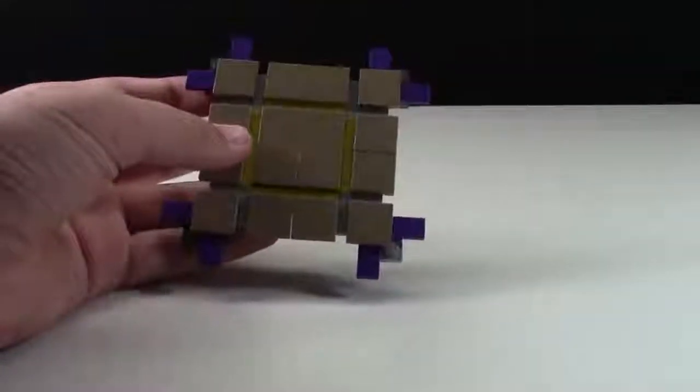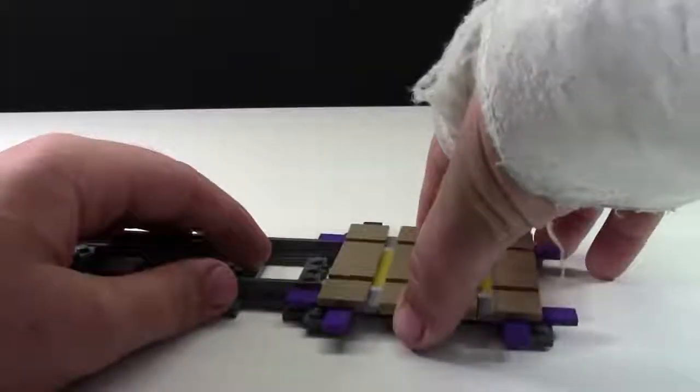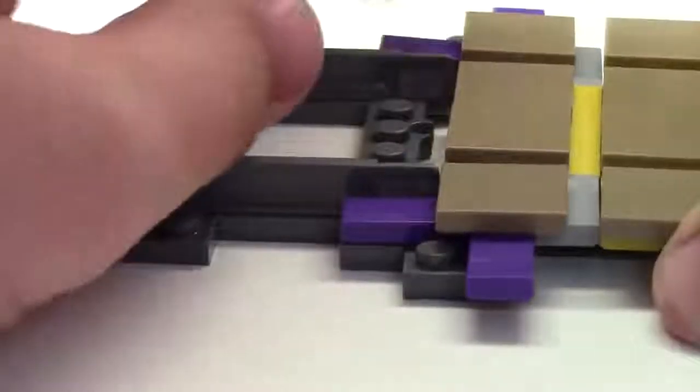And now your four-way crossing is complete. To assemble it to the track what you just do is you bring it up towards the track and you use these tiles to properly fasten it on.